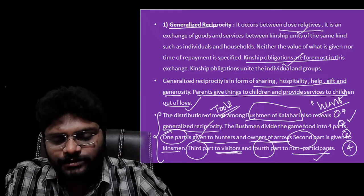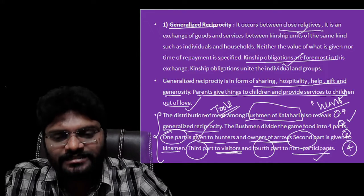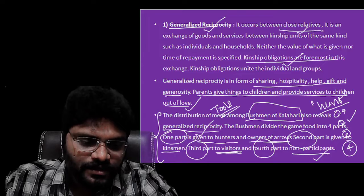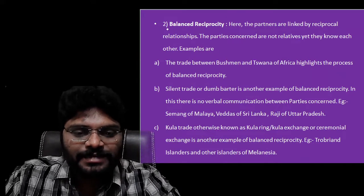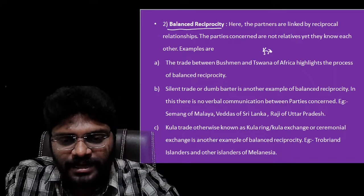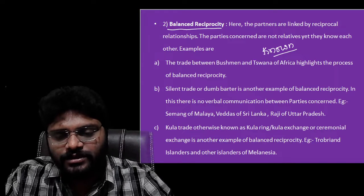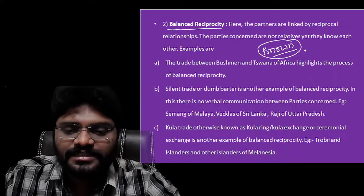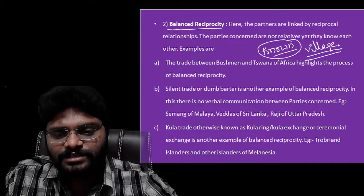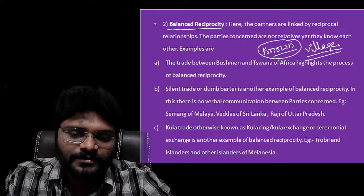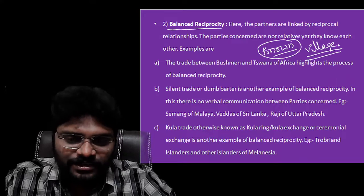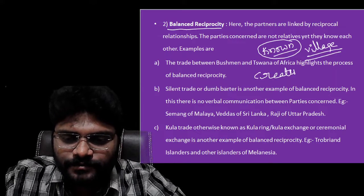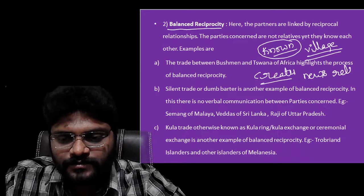In generalized reciprocity, giving takes place without expecting anything in return. It is done out of affection, love, and to enforce already existing bonds. Next is balanced reciprocity, which occurs between known parties in a village — one clan's people know another clan's people because they were born, grew up, and played together. In balanced reciprocity, the giver also receives a gift from the receiver. The value of the gift is specified, the time of repayment is specified, and it creates new relationships between known persons.